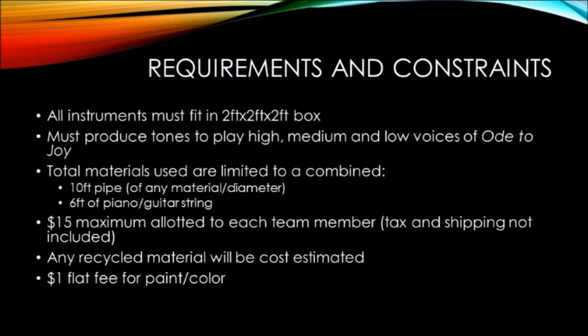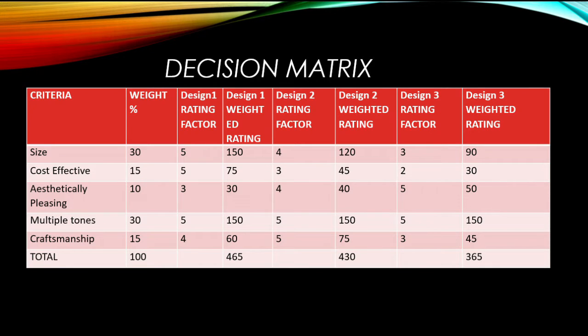This is Joseph Woodrell to discuss the criteria and decision making used to decide which Band in a Box design we would go with. Our primary criteria were size, cost effectiveness, being aesthetically pleasing, being able to generate multiple tones, and the overall craftsmanship required to build the individual instruments. Our decision matrix laid out our weightings for all three designs. While design one — the one we chose — was not the most aesthetically pleasing and required slightly higher craftsmanship, it was the best in terms of size and cost effectiveness.